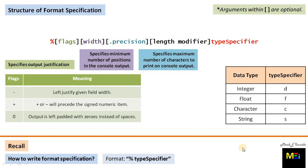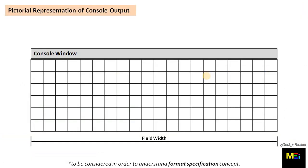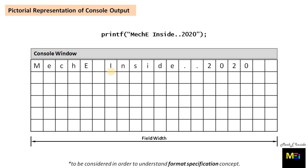No problem if you still didn't get these particular things — you can just note them down and we will explain with relative examples. Before moving further, this is the pictorial representation of the console output window needed to understand the format specification concept. This is the entire width of the window, also called the field width of the console output. Each character including blank space occupies one position, or one field.